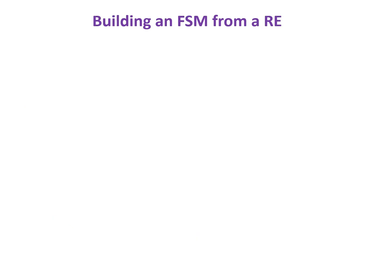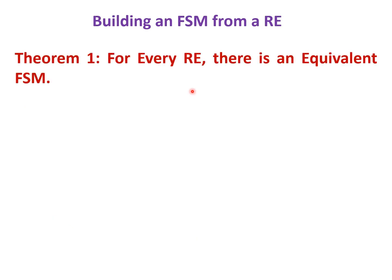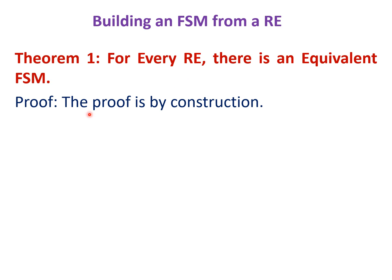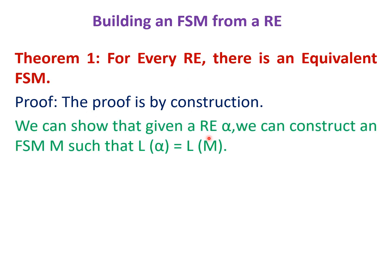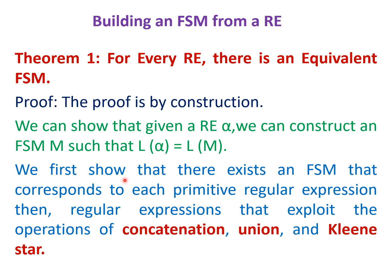Let us take up the first theorem: for every regular expression, there is an equivalent FSM. The proof is by construction. That is, given a regular expression alpha, we can construct an FSM M such that L(alpha) equals L(M). We first show that there exists an FSM M for each primitive regular expression, then discuss concatenation, union, and Kleene's star operations.